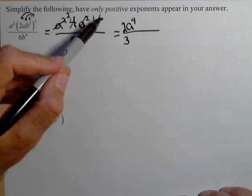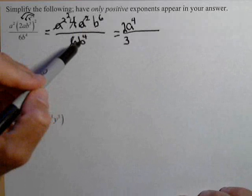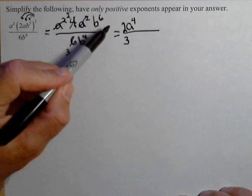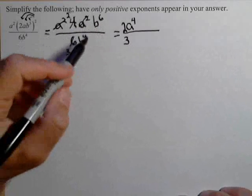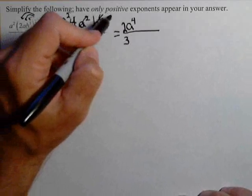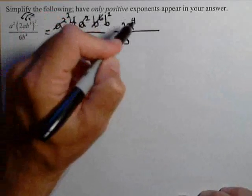Lastly, we have b to the sixth on top and b to the fourth on bottom. It's like we have 6 b's—b times b times b, 6 times on top and 4 times on bottom. So those 4 b's are going to cancel out with 4 of the ones on top, leaving us with b squared.